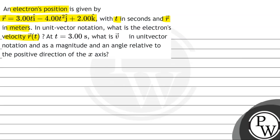Moreover, at time t equals 3 seconds, we have to find the velocity vector in unit vector notation and its magnitude. In part c, we are required to find the angle which this velocity vector makes with the positive direction of the x-axis at time t equals 3 seconds.